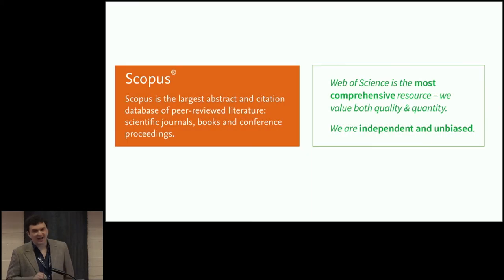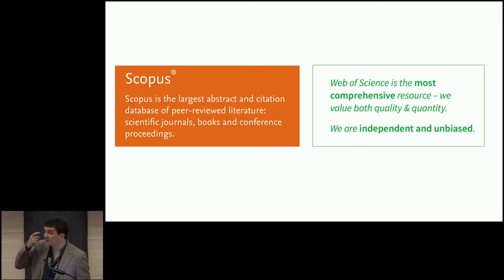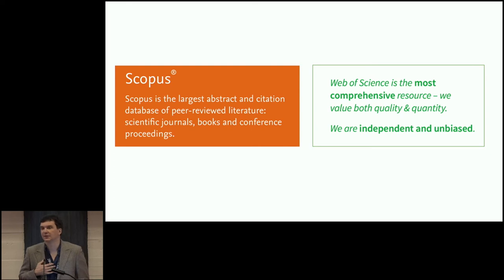So given how critical citations are for the functioning and vetting of science, you would expect the citation graph to be a shared resource that belongs to everyone and that everyone can use. The reality is not quite so. As it turns out, the primary source of data about scholarly citations that the entire planet depends on comes from proprietary databases from two companies: Scopus, a product by Elsevier, and Web of Science, formerly by Thomson Reuters, now Clarivate.